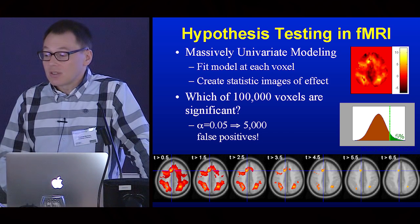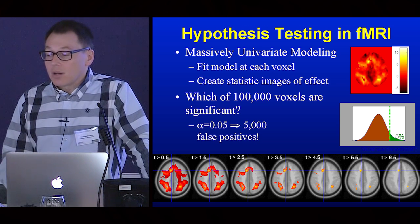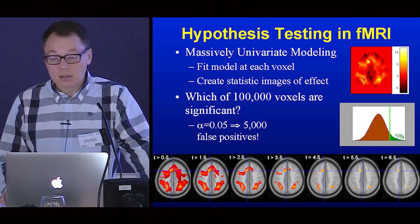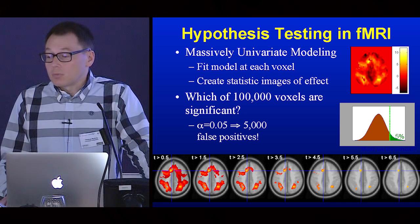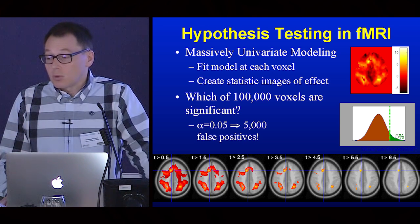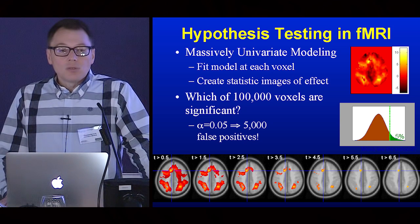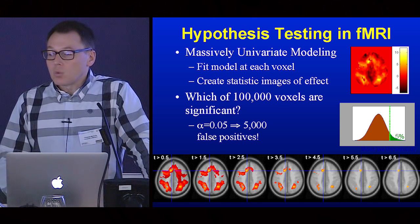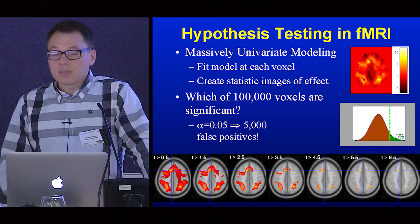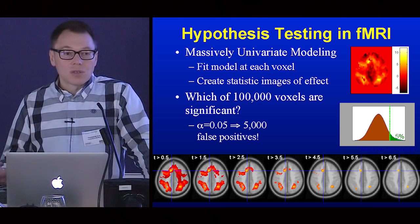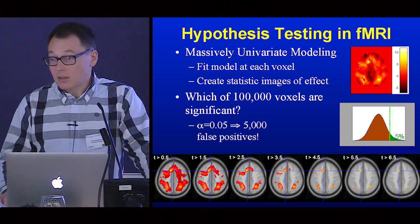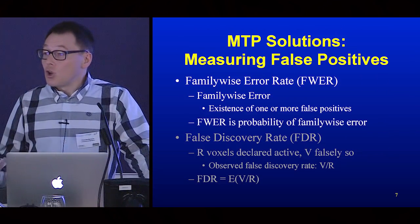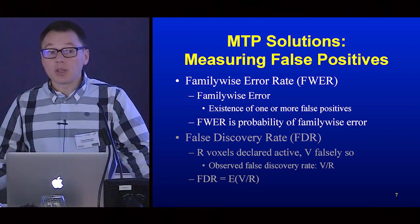So that's the nature of the multiple testing problem — we need a principled method to decide what is the right threshold in a classical hypothesis testing setting that controls false positives. But once you leave the warm fuzzy world of a single hypothesis test, what is a false positive? When you have 100,000 tests, what does it mean to be wrong? It turns out there's no single definition — there are actually multiple definitions.